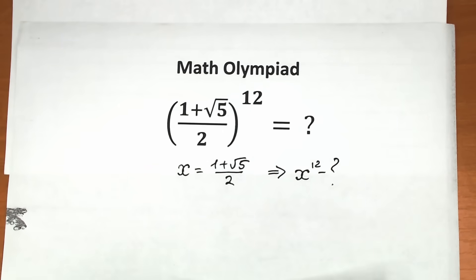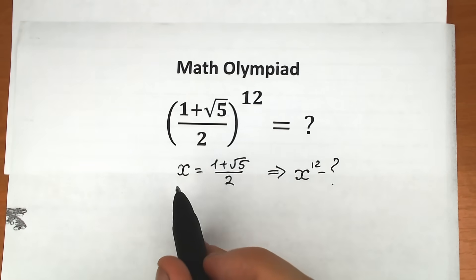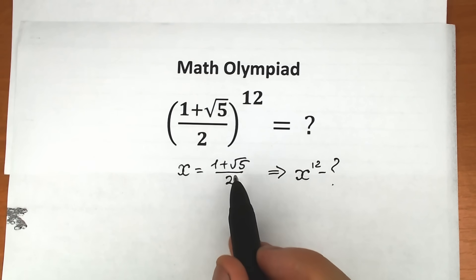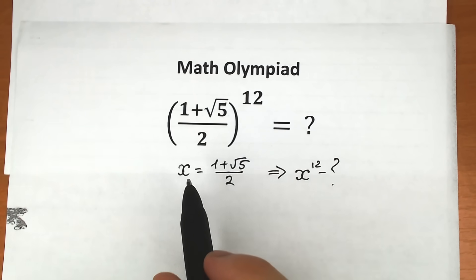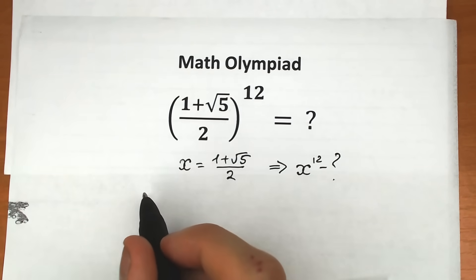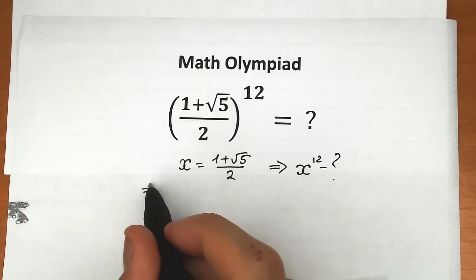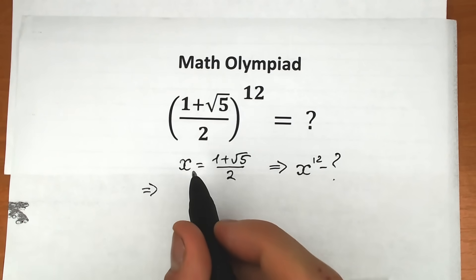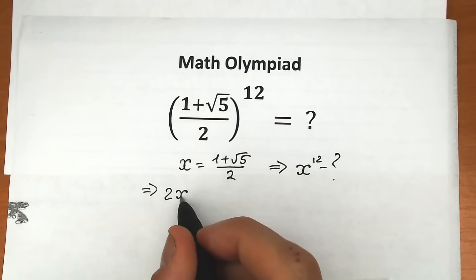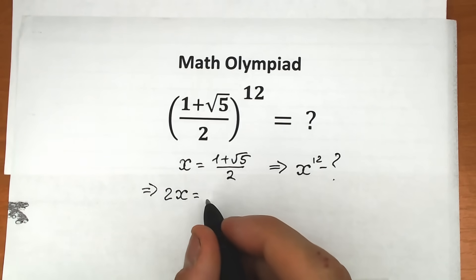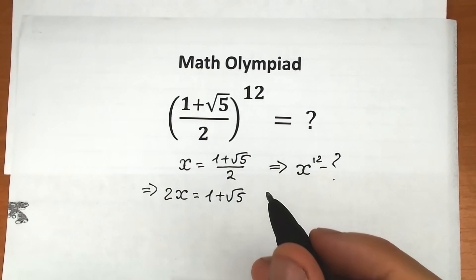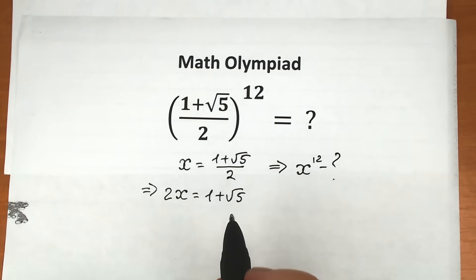Let's simplify this expression a little bit. First, let's cancel the denominator by multiplying both sides by 2. So we have 2x = 1 + √5. This is our first step.